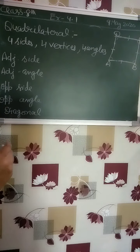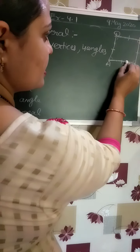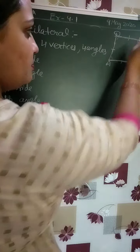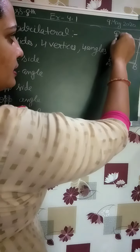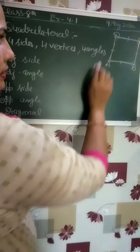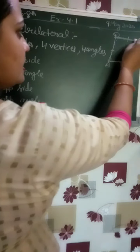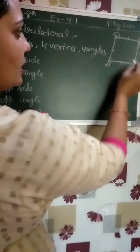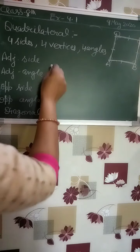Adjacent side — let me explain what an adjacent side is. Consider a quadrilateral with vertices A, B, C, D. The sides AB, BC, CD, and DA are the adjacent sides. I hope you understand.